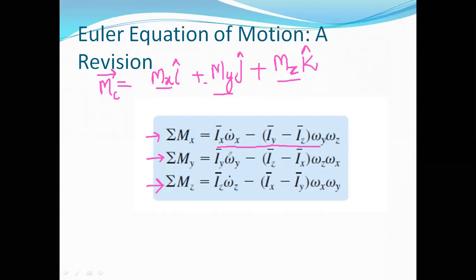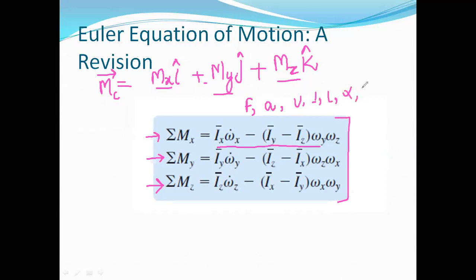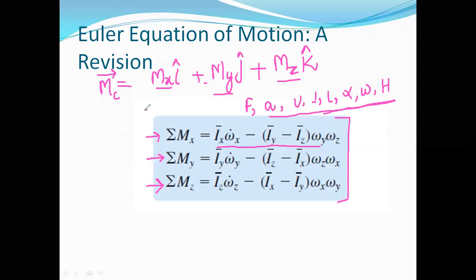These terms represent the Euler equations of motion in three dimensions, describing the motion of a rigid body in three dimensions. From these equations we obtain the force, acceleration, velocity, impulse, momentum, angular acceleration, angular velocity, and angular momentum of the rigid body — essentially describing the motion of the rigid body with the help of these equations.